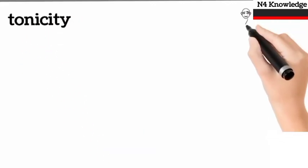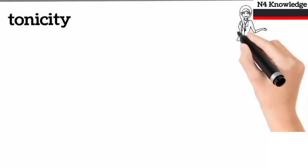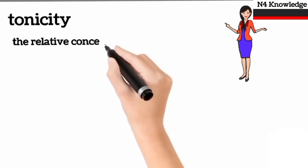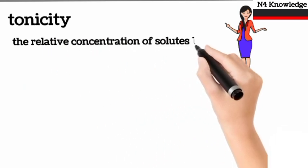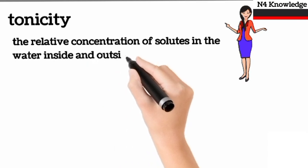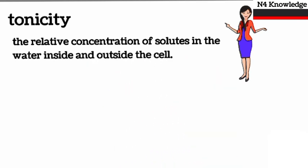Tonicity. You must have heard this word before, and if not, that's alright. Tonicity is the relative concentration of solutes in the water inside and outside the cell. In simple words, tonicity gives us the comparison of solute quantity in both the solutions inside and outside the cell.